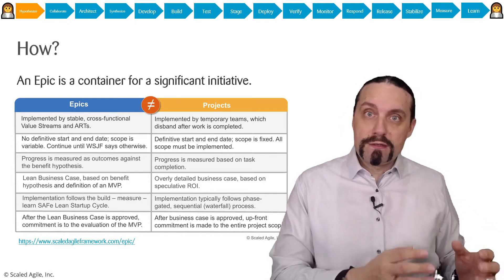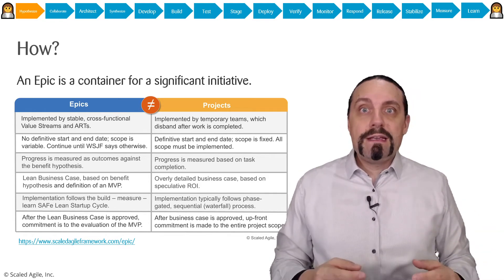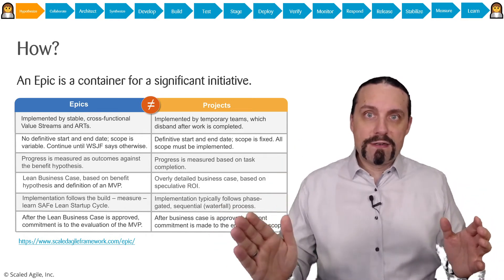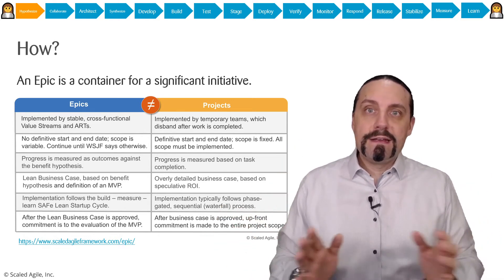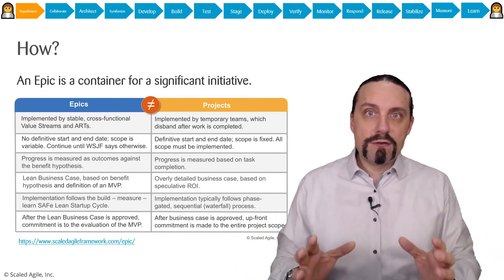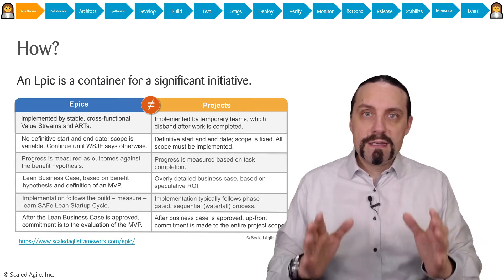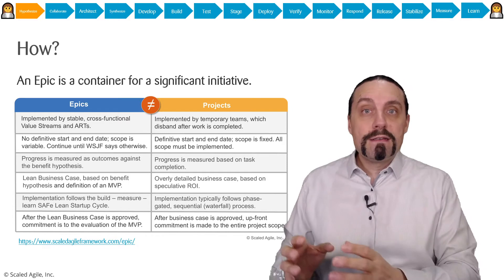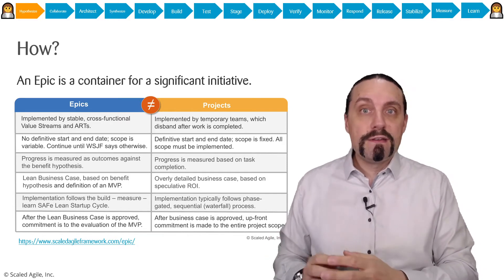A project on the other hand is a thing which has a clear start and a clear end. It has a budget. It has a timeline and it has a clear set of requirements and tasks which need to be done. And that's something completely different than an epic.